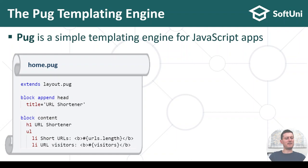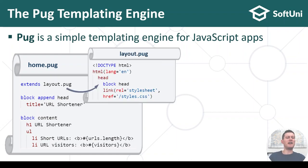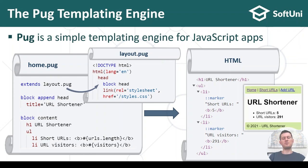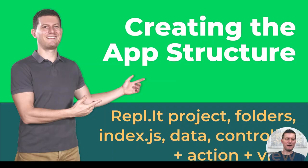Basically, we have a home page template which includes a layout template, which adds the header and footer for our app. When we render it, the output is an HTML document displayed by the browser — in our case showing the URL shortener page.